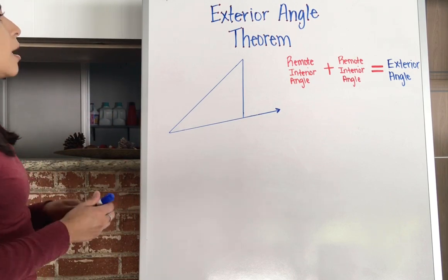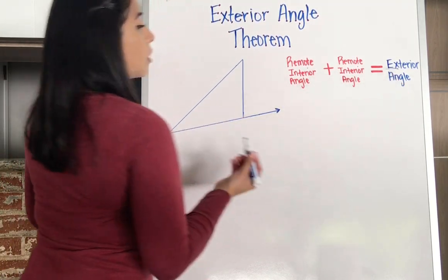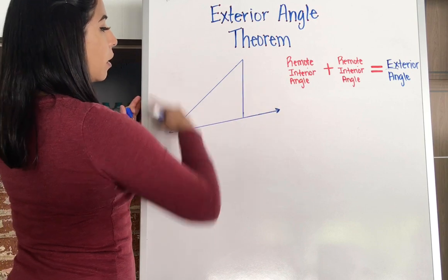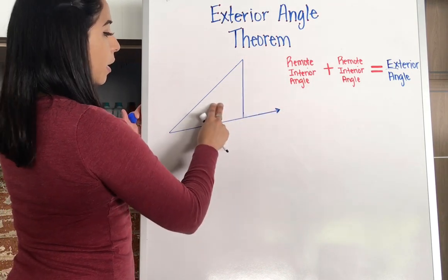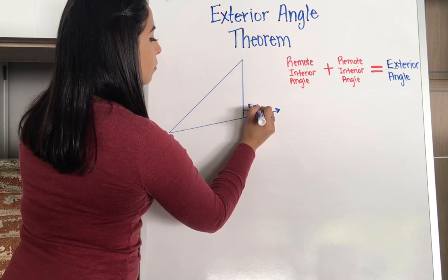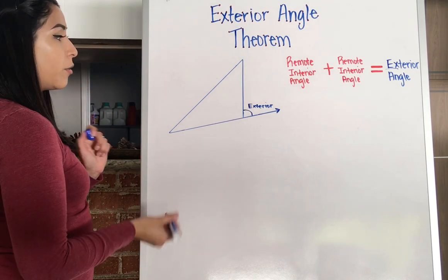So I'll start with exterior. So exterior, you guys kind of know what that word means? It means outside. So outside of the triangle, not inside of it, but outside of it. So that's going to be this angle right here. And that is the exterior angle.